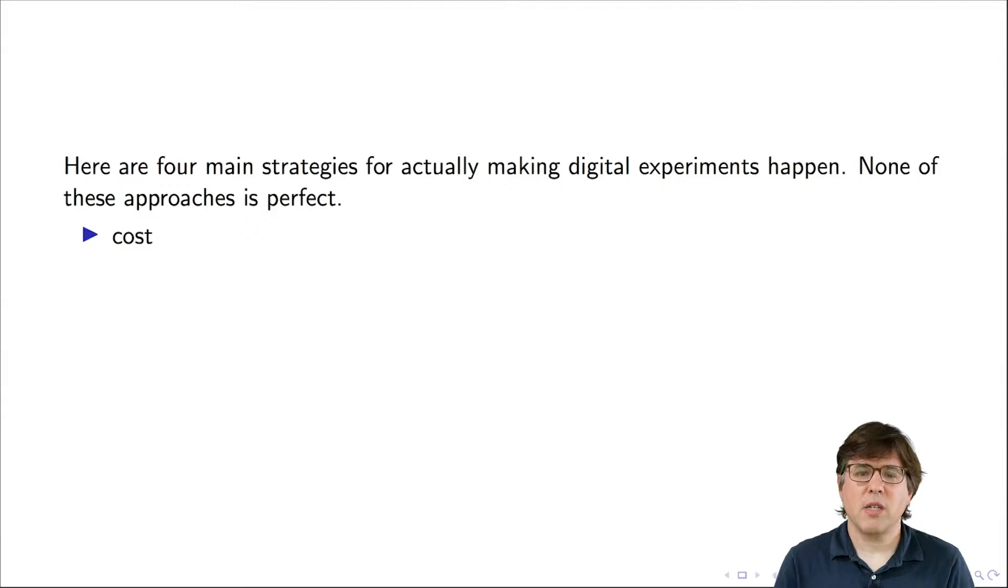I think there are four main strategies for actually making digital field experiments happen, and none of these approaches are perfect. As I go through the approaches, I'm going to evaluate them in terms of different dimensions. There are four main dimensions along which they vary. The first is cost. Cost includes cost in terms of money to build the experiment and to pay participants potentially, but it also includes cost in terms of your time.